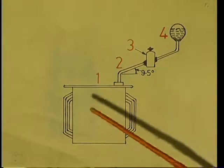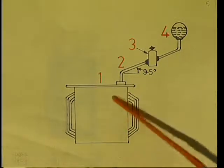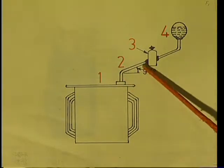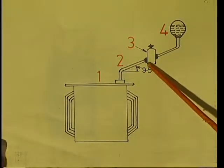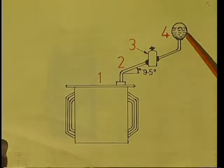The Buchholz relay is a gas-operated relay. It is installed between the pipe connecting the main transformer tank to the conservator. Buchholz relays are used on transformers of rating above 750 kVA. The connection consists of: (1) the main transformer tank, (2) the connecting pipe, (3) the Buchholz relay installed in between, and (4) the conservator.